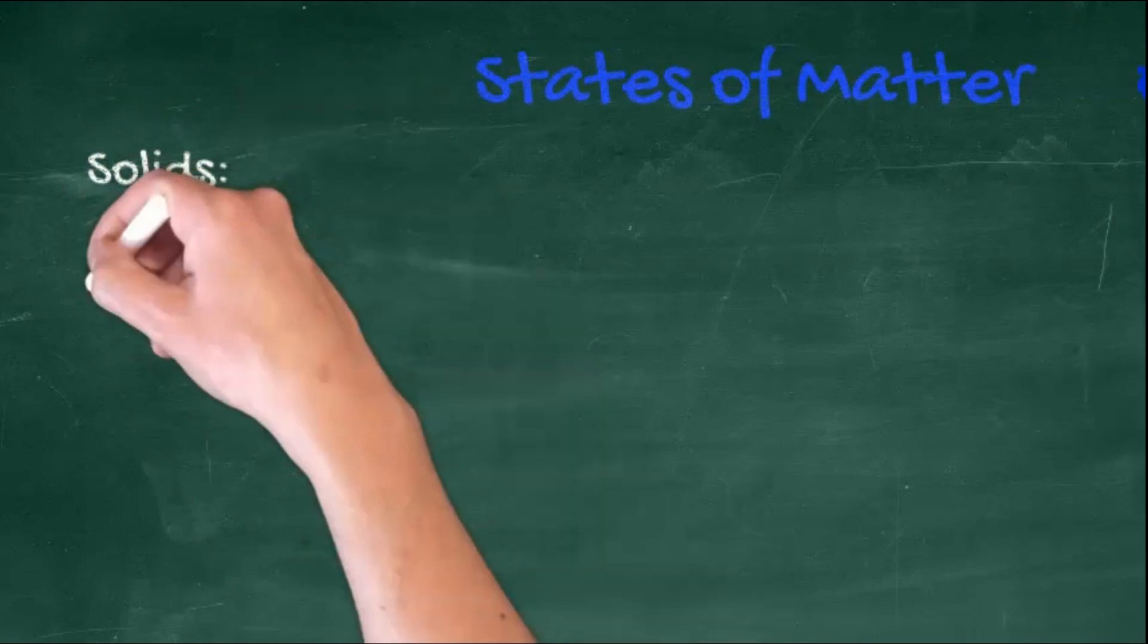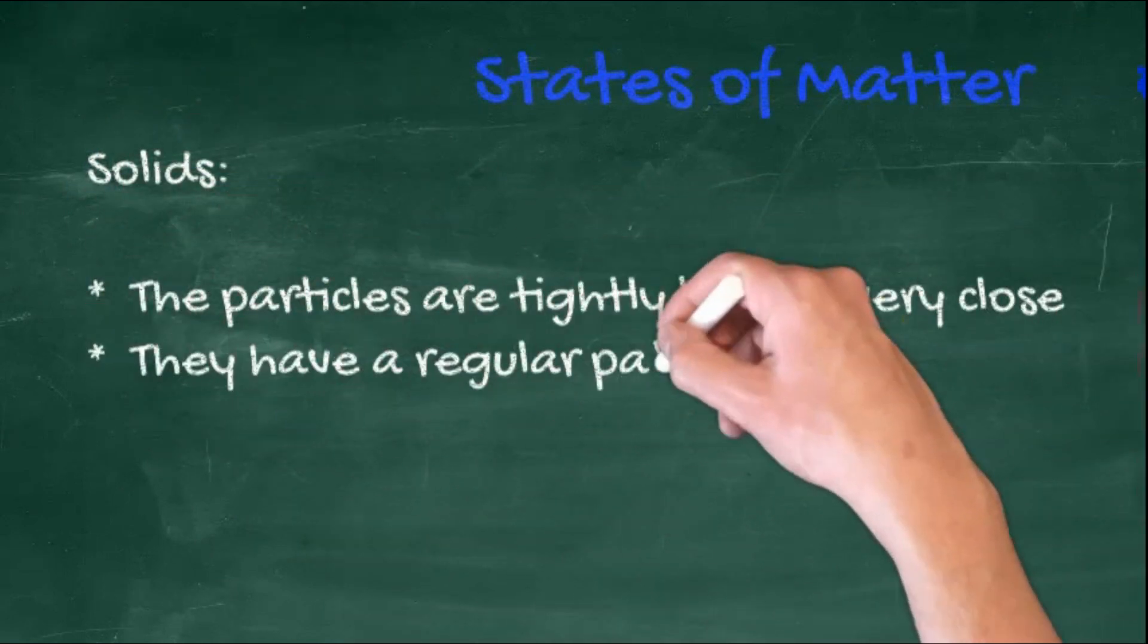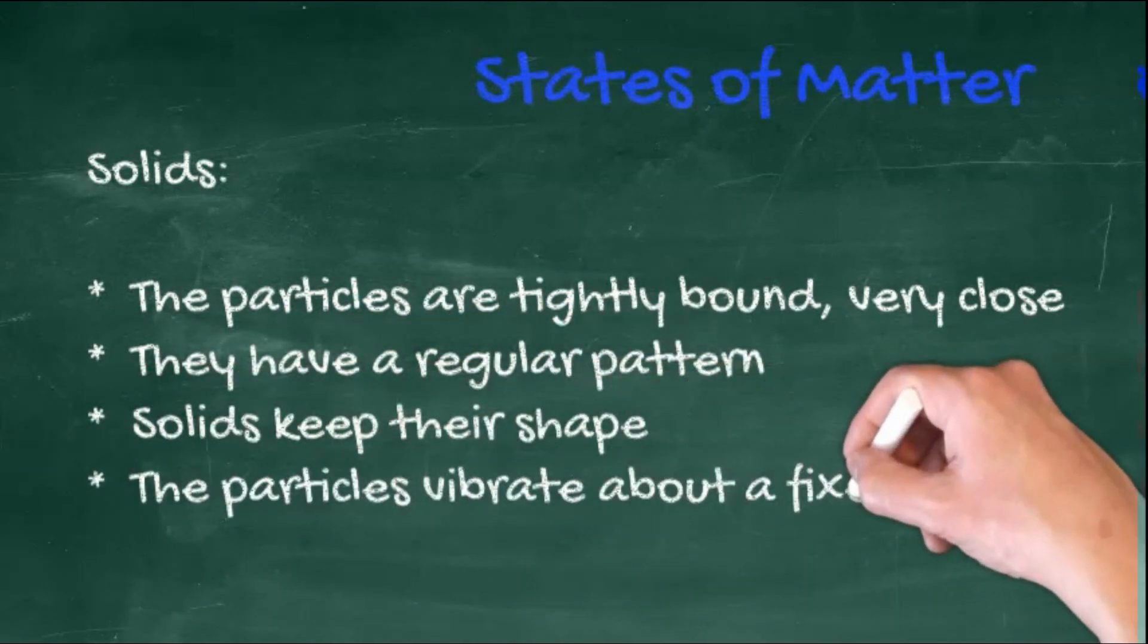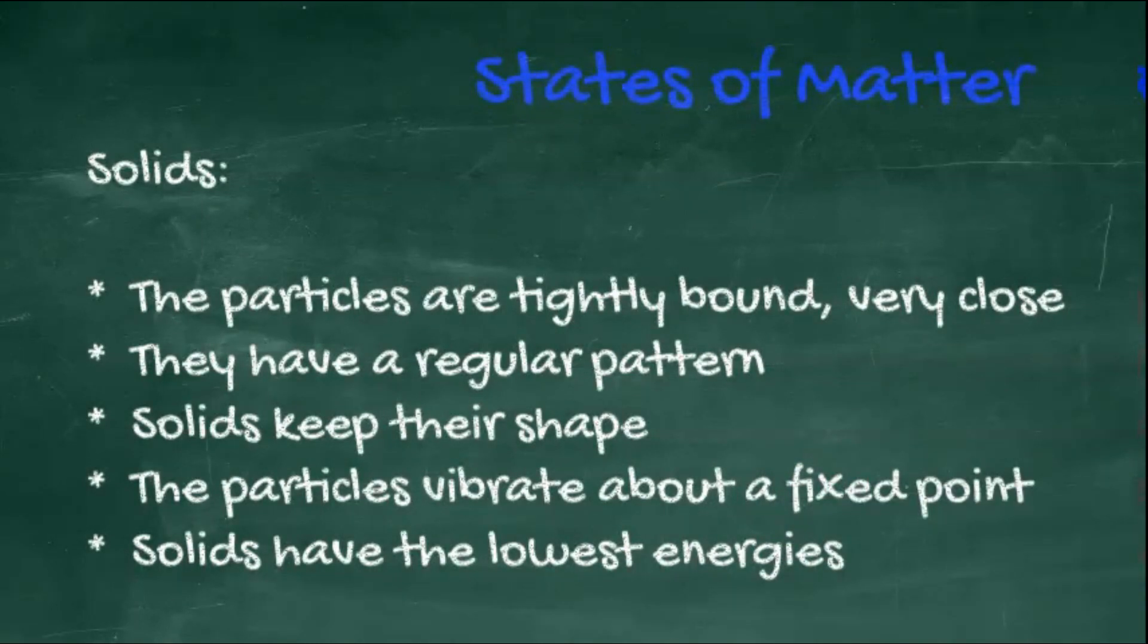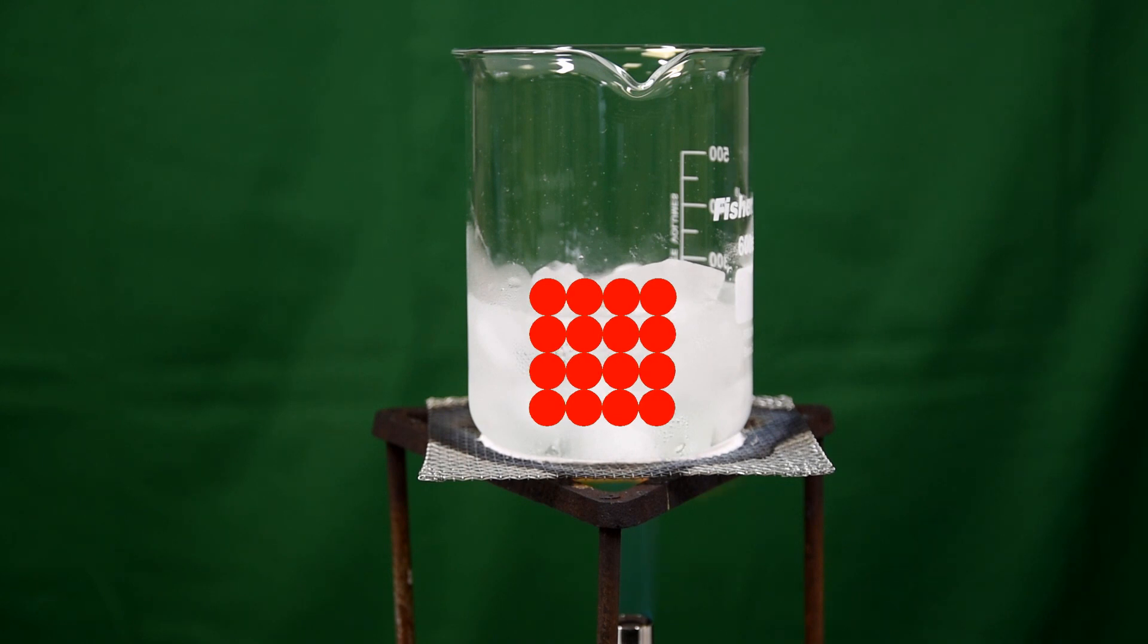Looking at the conventional three states of matter, starting with solids. In solids, the particles are tightly bound and very close together. They have a regular pattern, keep their shape, and vibrate about a fixed point. Solids are the lowest energy state.